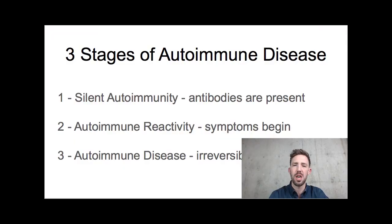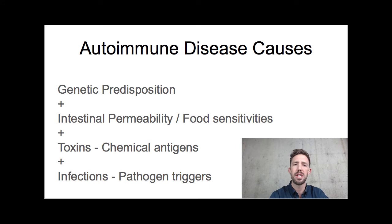Another important topic before we jump into lab testing is what can cause autoimmune disease, because when we're testing we're trying to figure out how the person is functioning, but also what caused that fire and how we can make sure it never happens again. A genetic predisposition is part of this — like knocking a candle onto a pile of old papers versus into a pool. A lot of the HLA genes — human leukocyte antigen genes — HLA-DR, HLA-DQ, HLA-B27 — cause a genetic predisposition.